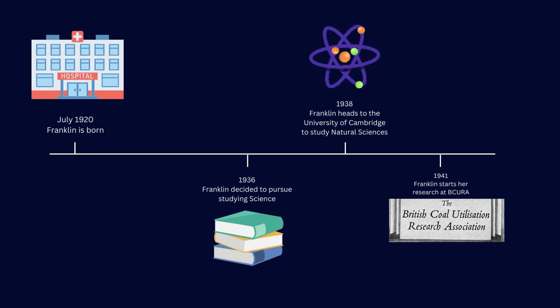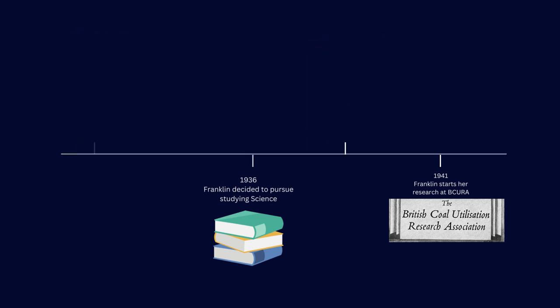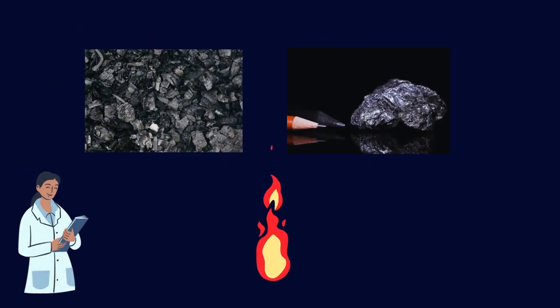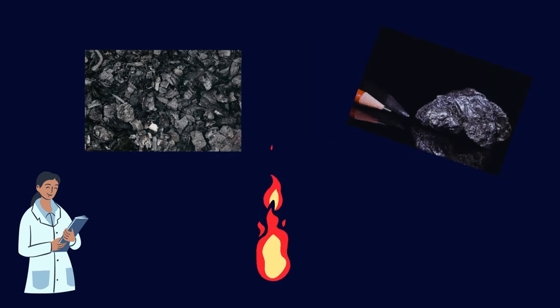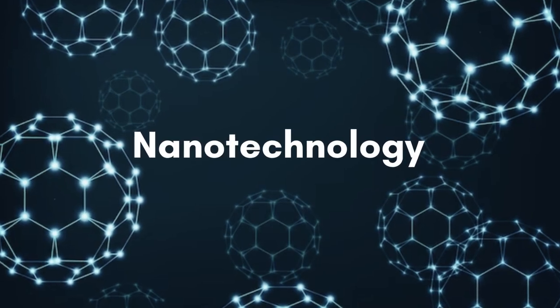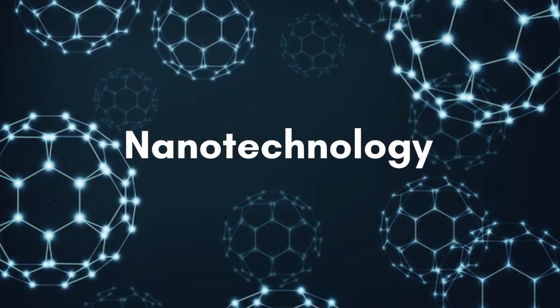After graduating in 1941, Franklin became involved in the war efforts when she joined the British Coal Utilisation Research Association and worked for four years to discover how heating different forms of carbon like coal and graphite can affect how easily substances like water and gases can pass through them. Her work established her as a pioneer in carbon technology which has now expanded into an exciting area of chemistry by the name of nanotechnology.